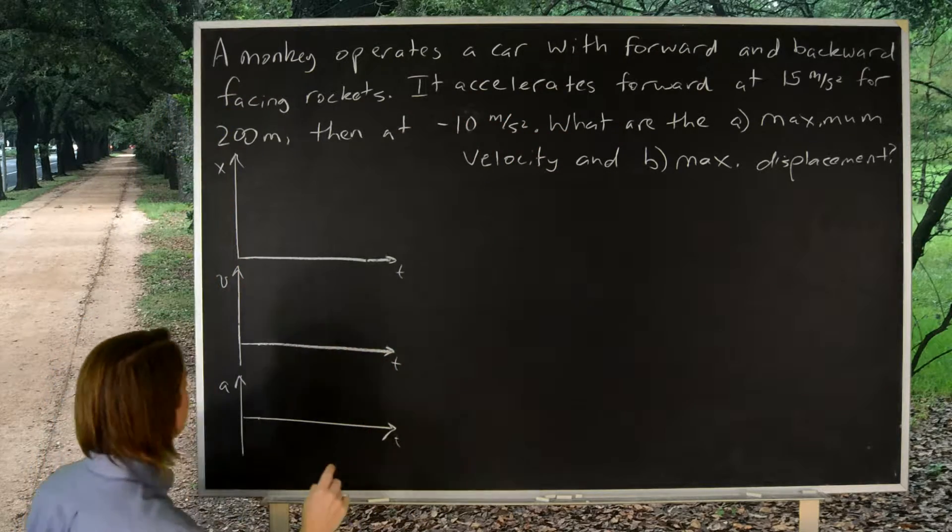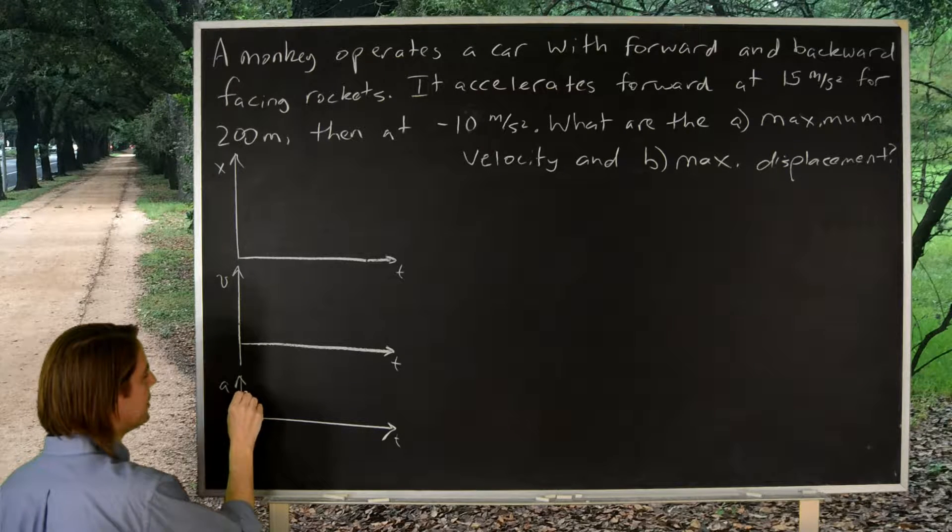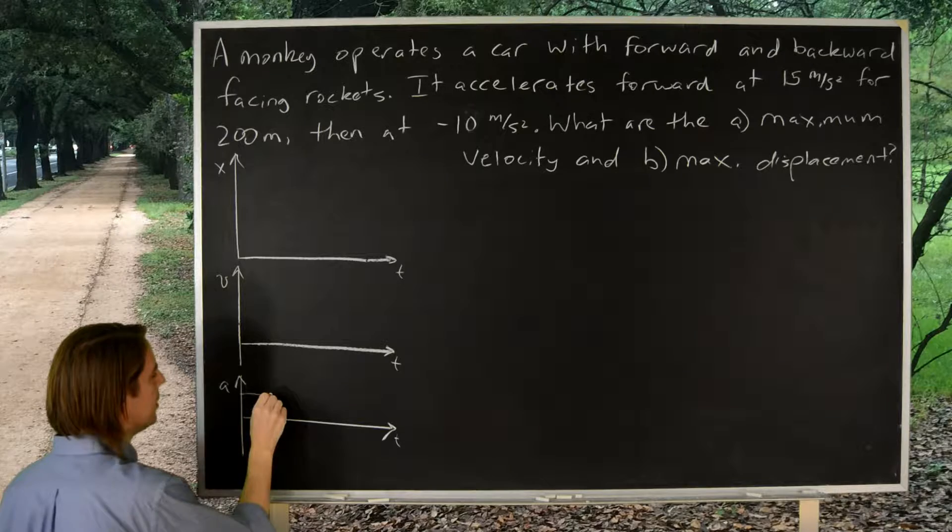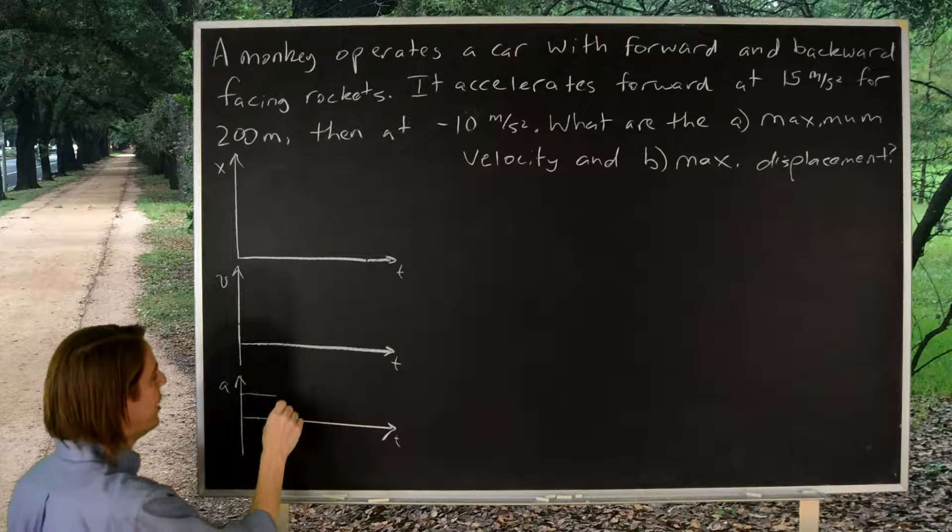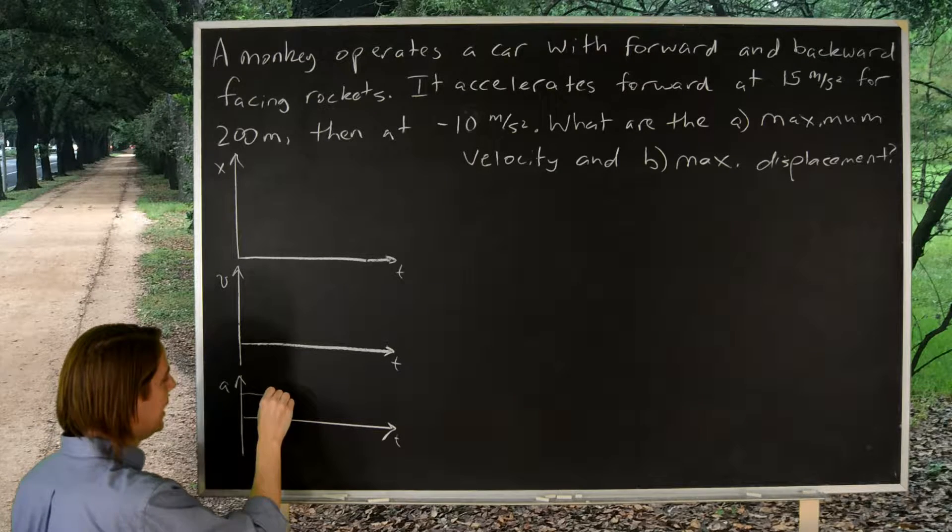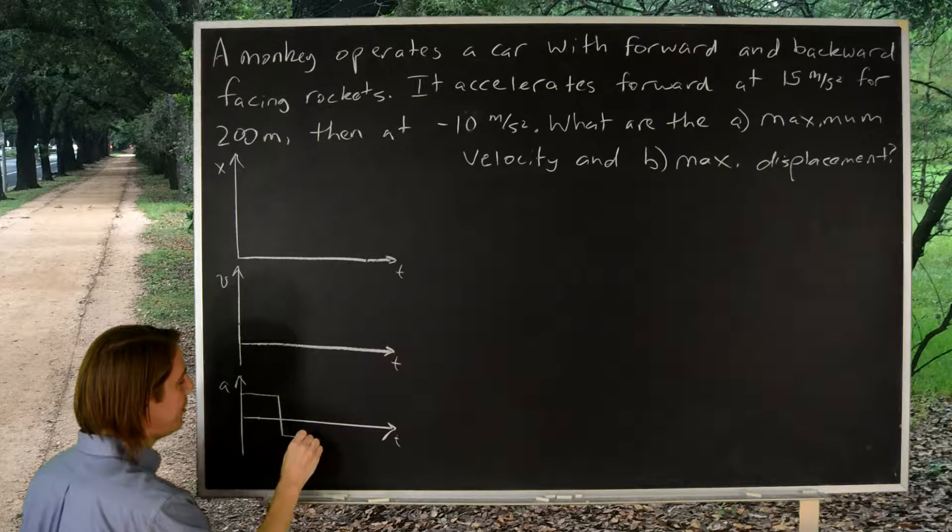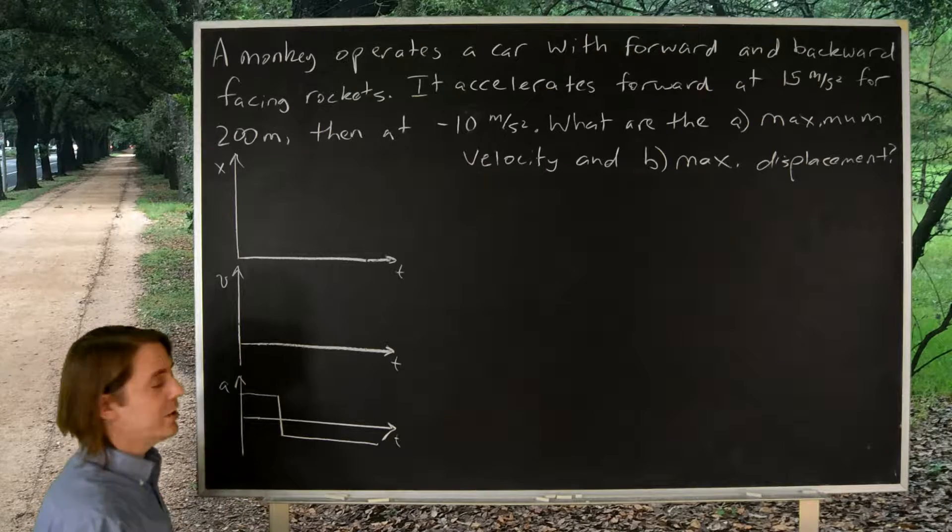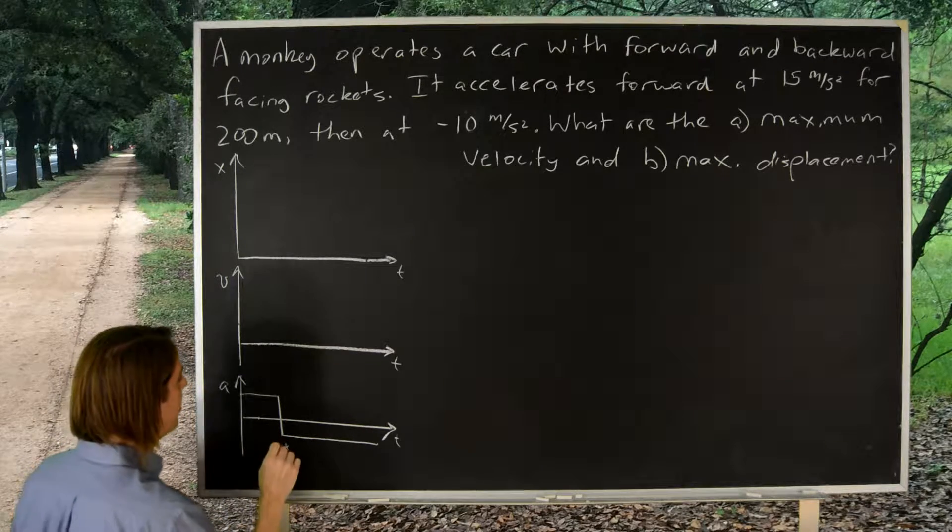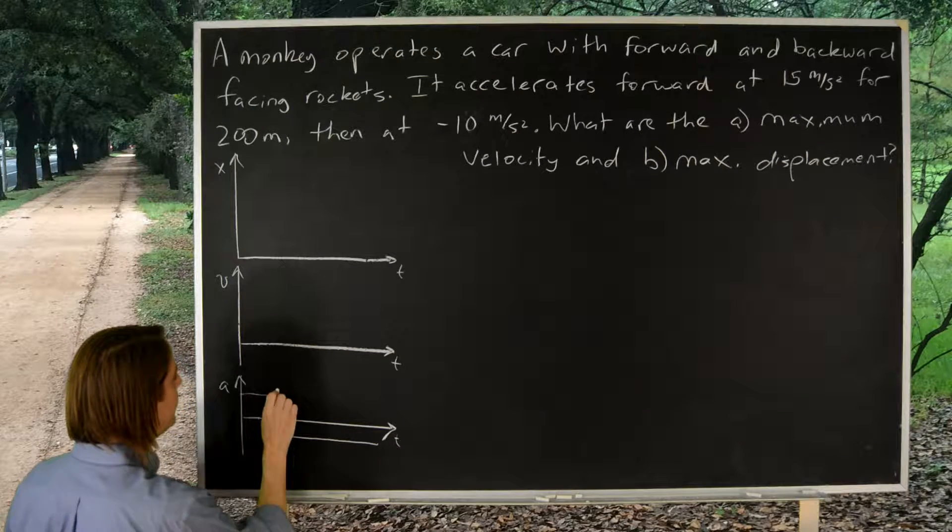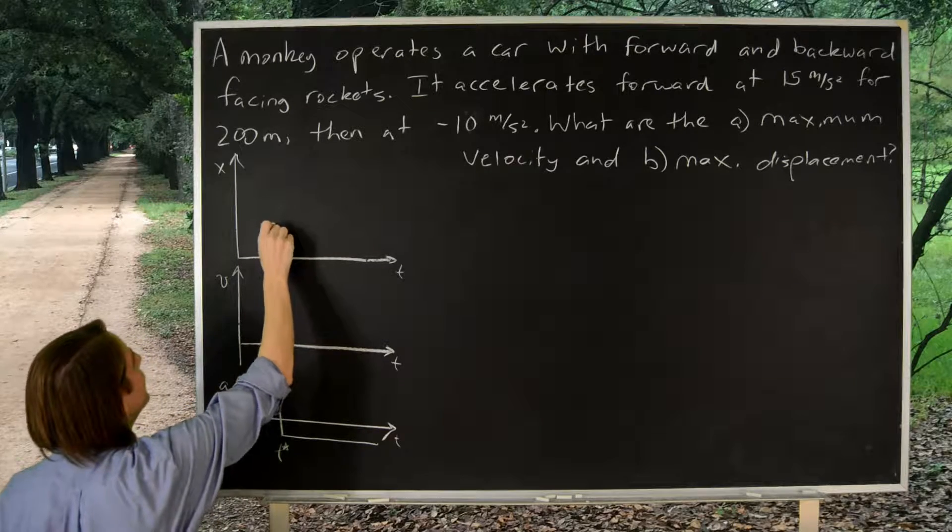Let's see. Forward at 15 meters per second squared. So I'm going to put 15 up here and it was a constant acceleration, so 15 meters per second squared for a while for 200 meters. We don't really know that on this axis. This is time, right? So for now we'll just say that happens at T star and then the acceleration immediately switches to minus 10 and then apparently stays at minus 10 for the rest of the problem. So we could call that T star that time. Maybe we'll need it, maybe we won't. But let's go ahead and say this was an important time. So let's do a dotted line going all the way up.